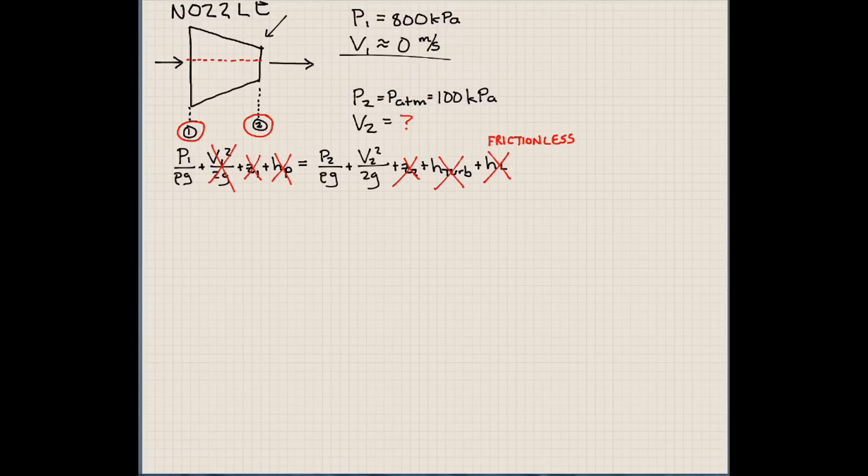So essentially what we've done is we've simplified our energy equation to be P1 over rho g equals to P2 over rho g plus V2 squared over 2g. So you can see here we can cancel out these, every term has a gravity. If we multiply by gravity, gravity should all go away, so we don't have to mess with that.